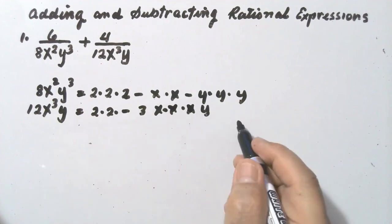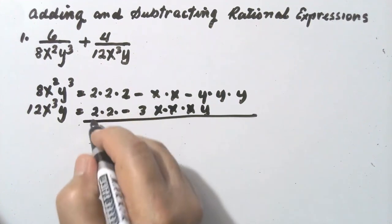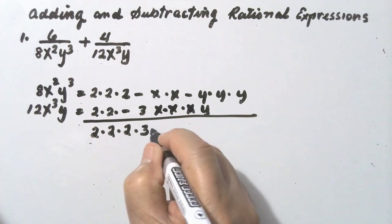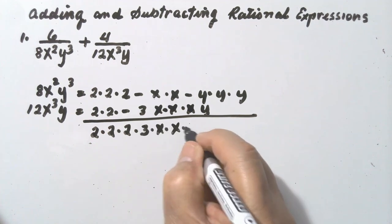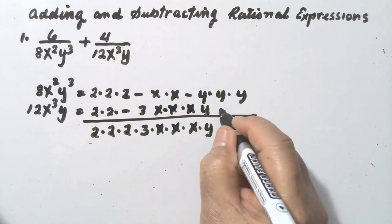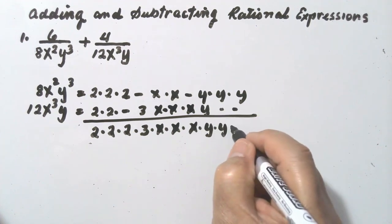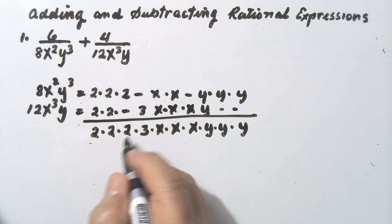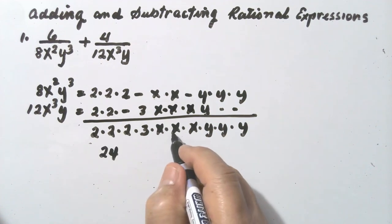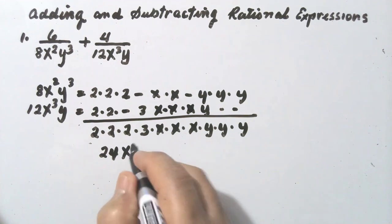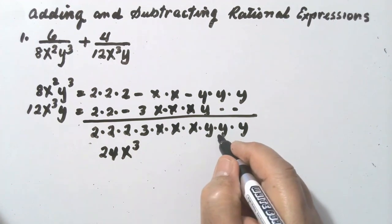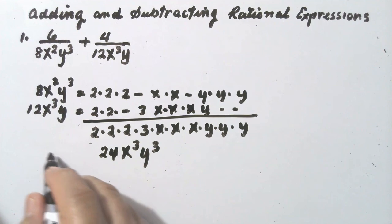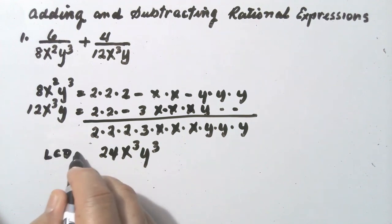Then y. Bring down 2, then 2, then 2, then 3, then x, x, x, then y, y, y. Multiply all these: 2 times 2 is 4, times 2 is 8, times 3 is 24. x times x is x squared, times x is x cubed. y times y is y squared, times y is y cubed. This is now the least common denominator.